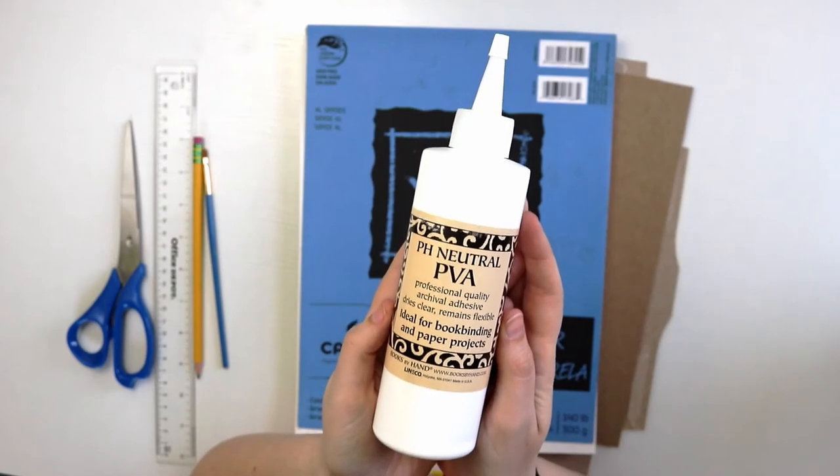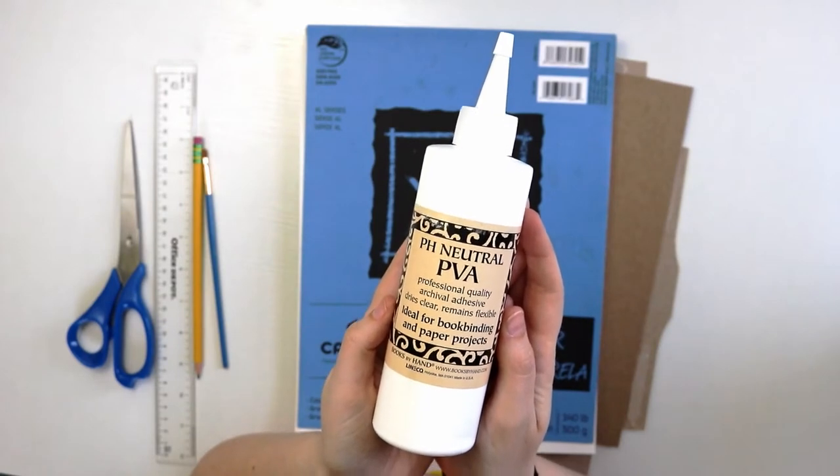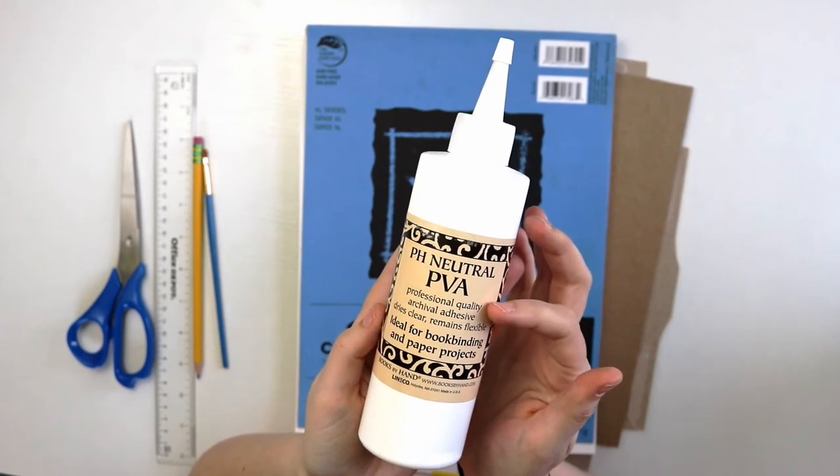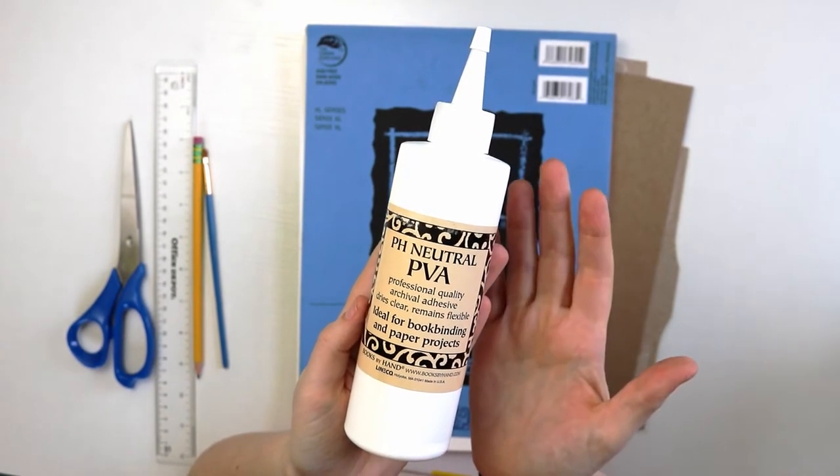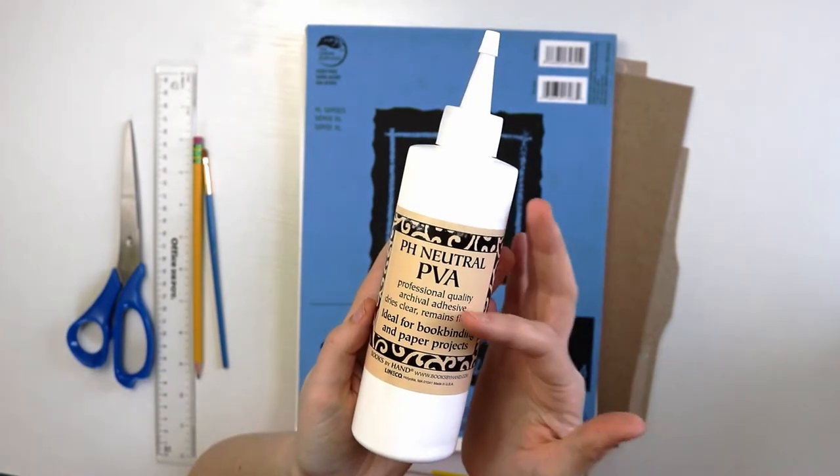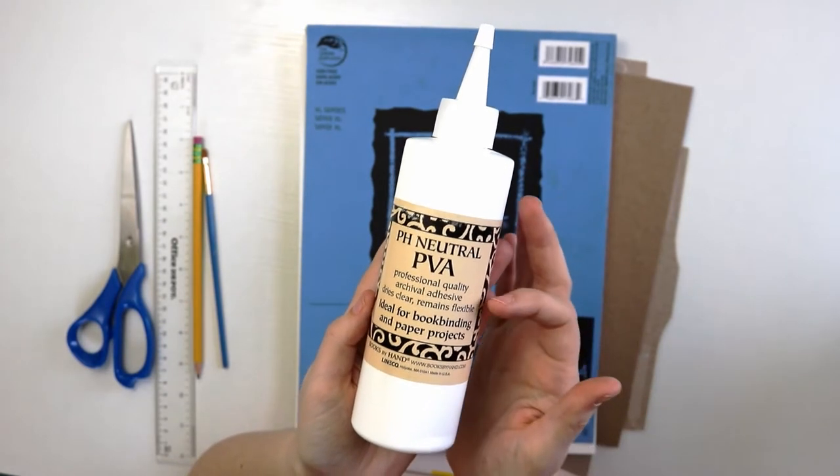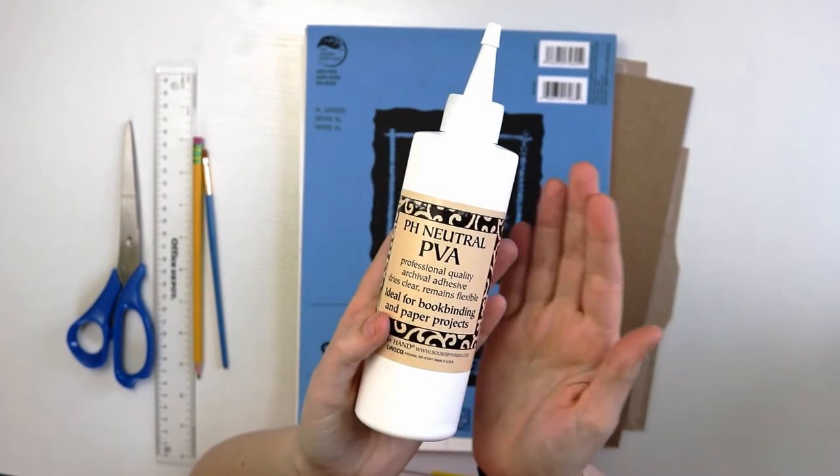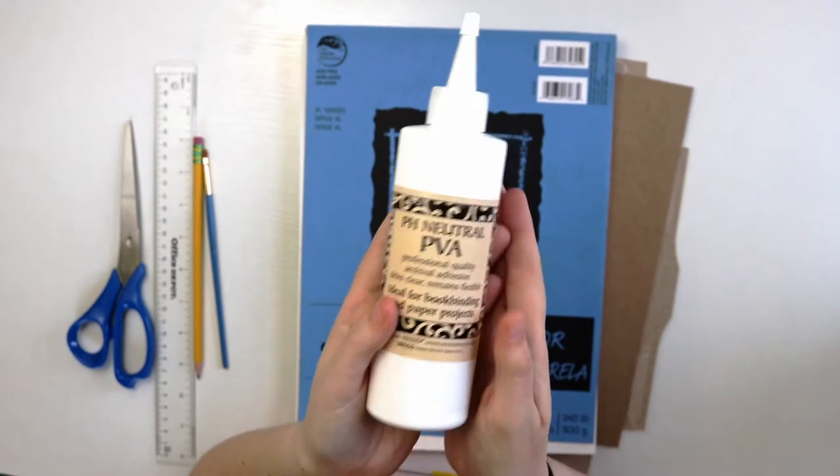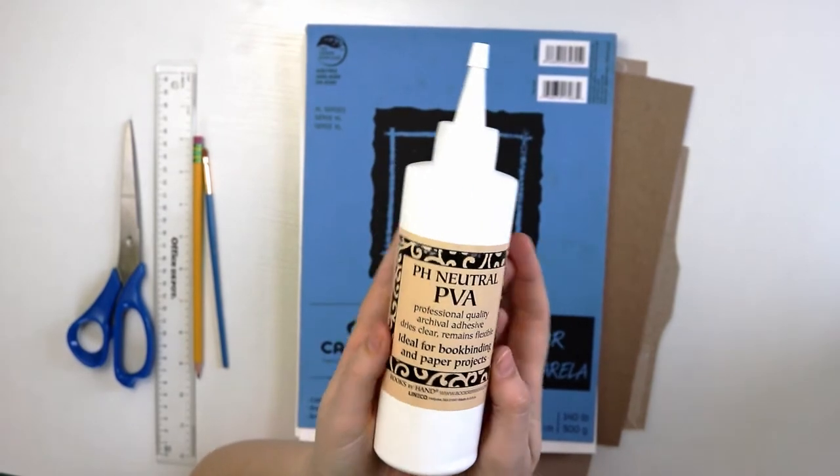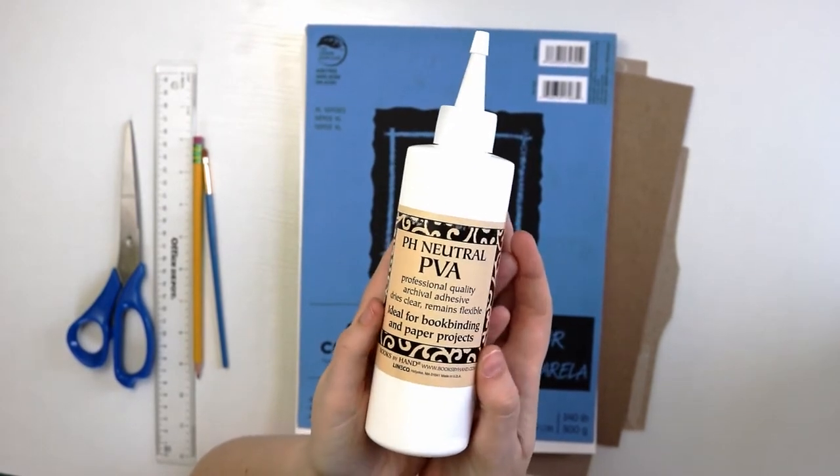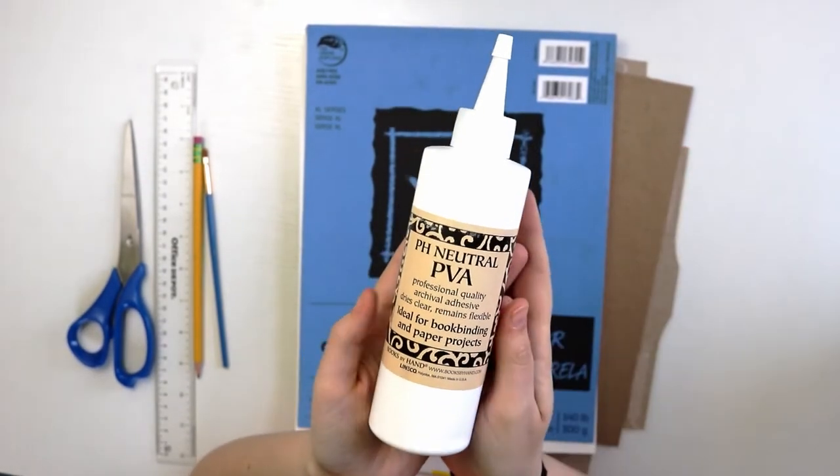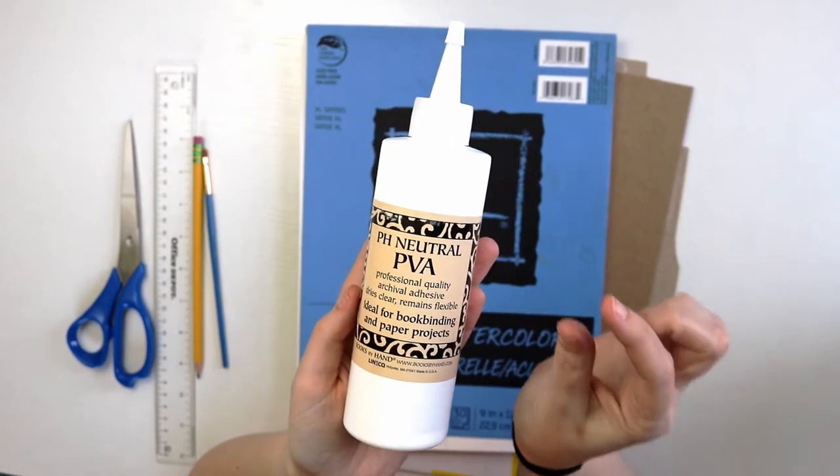I do recommend using this glue because it's specifically for bookbinding and paper projects. It is an archival adhesive therefore it will not yellow over time and it does dry clear yet remains flexible, which is perfect for when you're doing a sketchbook journal that you're going to be opening and closing a lot. So I will leave this linked in the description below if you are interested in purchasing some PVA glue. Now this bottle is very large and will last me a very long time because we're going to use only just a tiny amount.